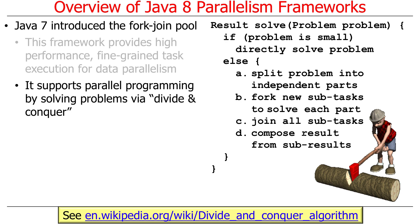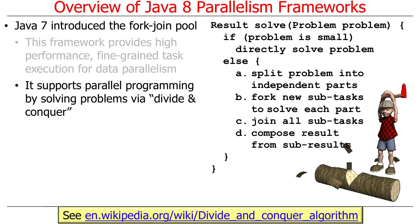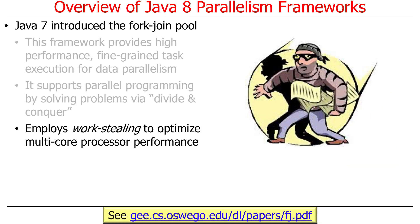Think of it like splitting a log in half, then splitting each half in half again, until you end up with pieces the right size for your fireplace. One of the really cool things fork-join pool does is implement a technique called work stealing, intended to optimize multi-core processor performance. There's a paper by Doug Lee discussing early versions of the fork-join pool — the final version is very close algorithmically. We'll go into work stealing in much more detail later.